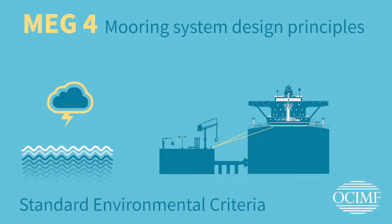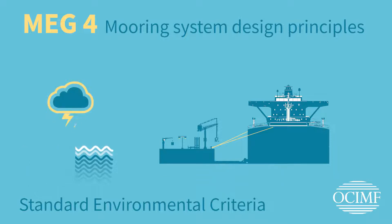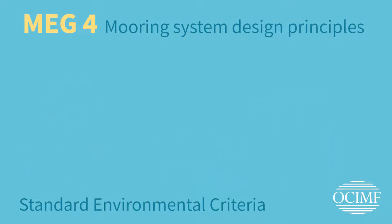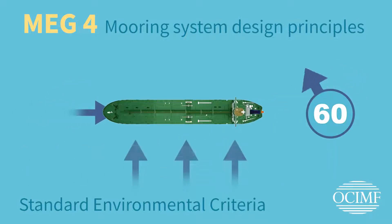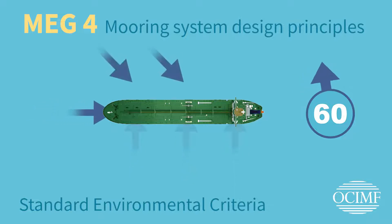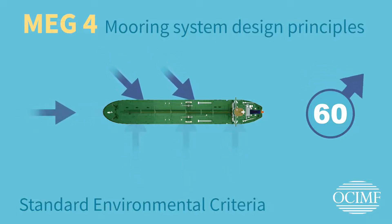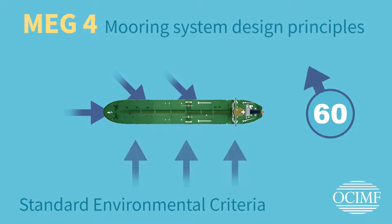Right at the heart of our philosophy is the OCIMF standard environmental criteria, which are to be used when designing a ship for international trading. These criteria allow for 60 knots of wind from any direction combined with three different current scenarios acting on the ship.